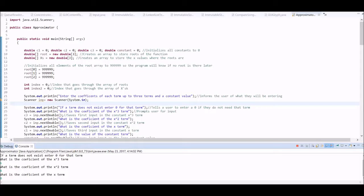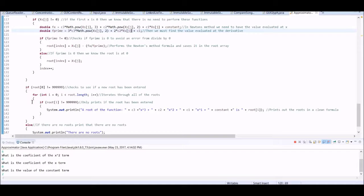For the x term, I will input 0. For the constant, I will input 2. X squared is saved for c2, and coefficient 0 is saved for c1. The constant is also saved.